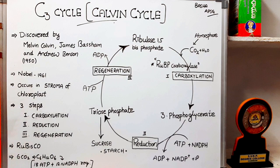This C3 Cycle actually occurs in the stroma of the chloroplast, because chloroplast is one of the important cell organelles which performs photosynthesis. In photosynthesis, two main steps are there: light reactions and dark reactions. We are now discussing about the dark reactions.